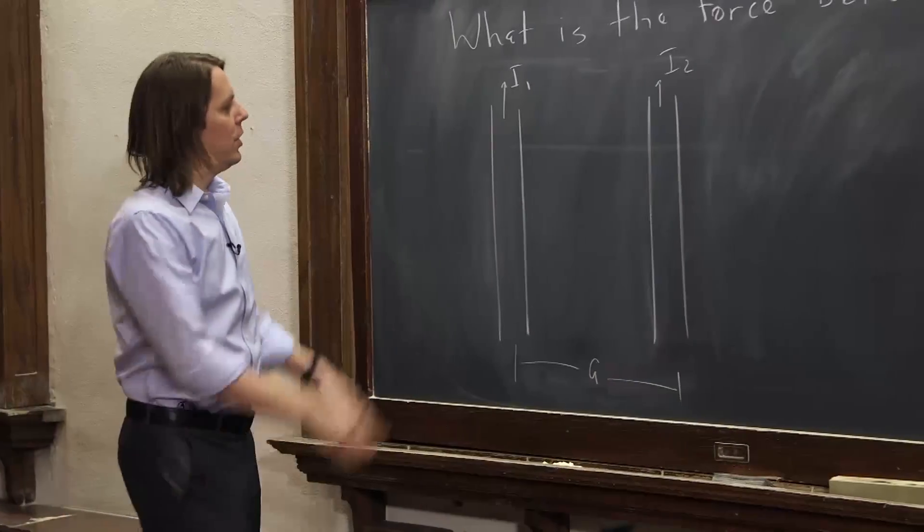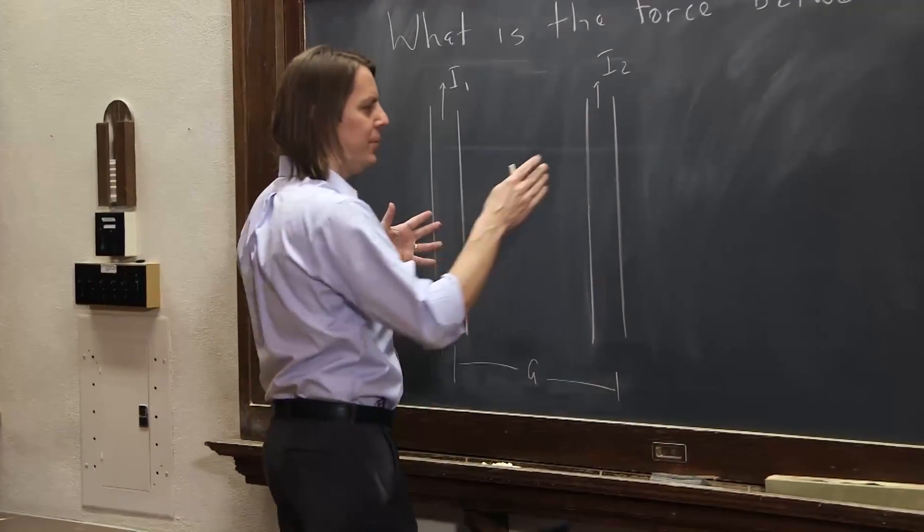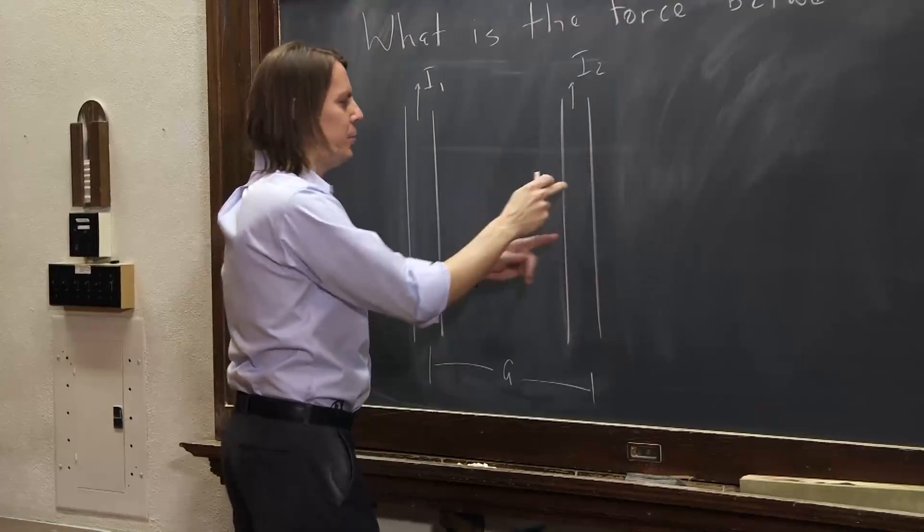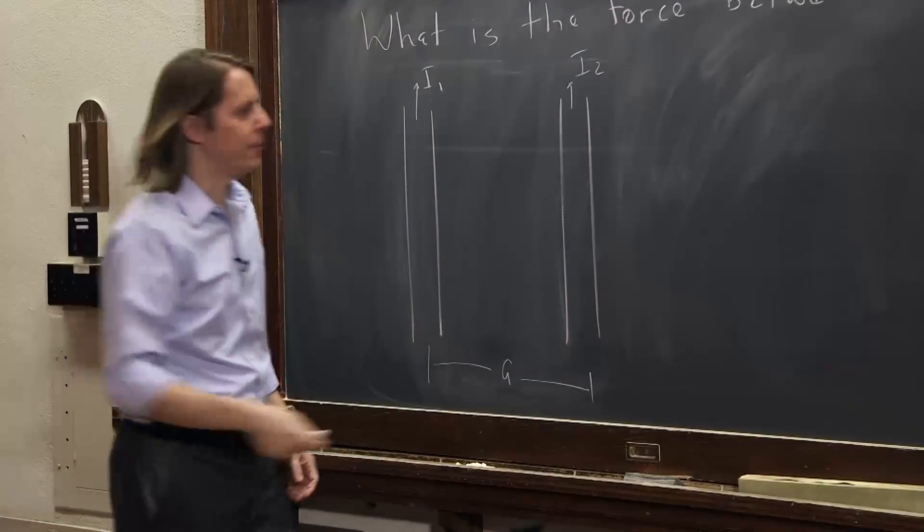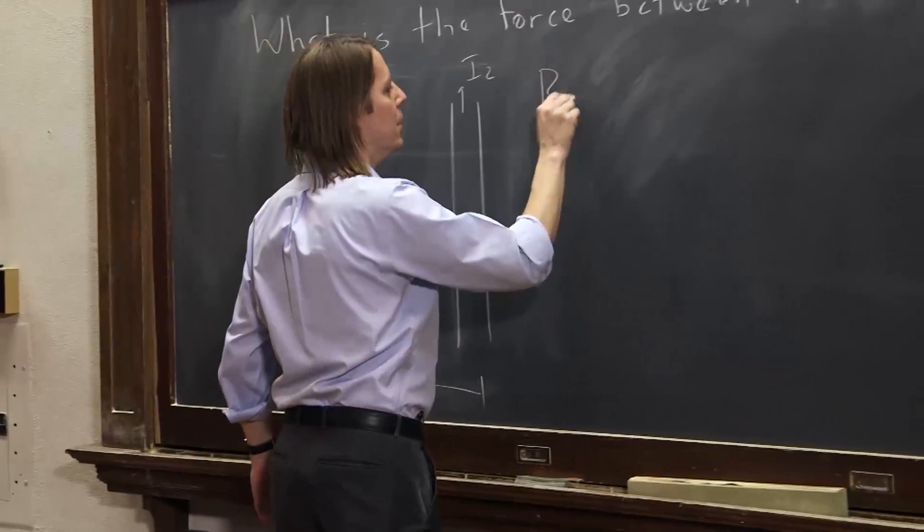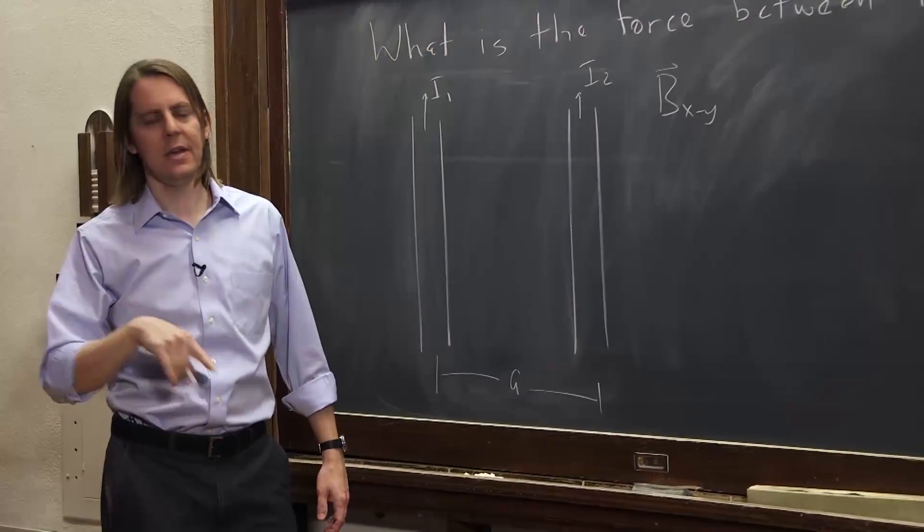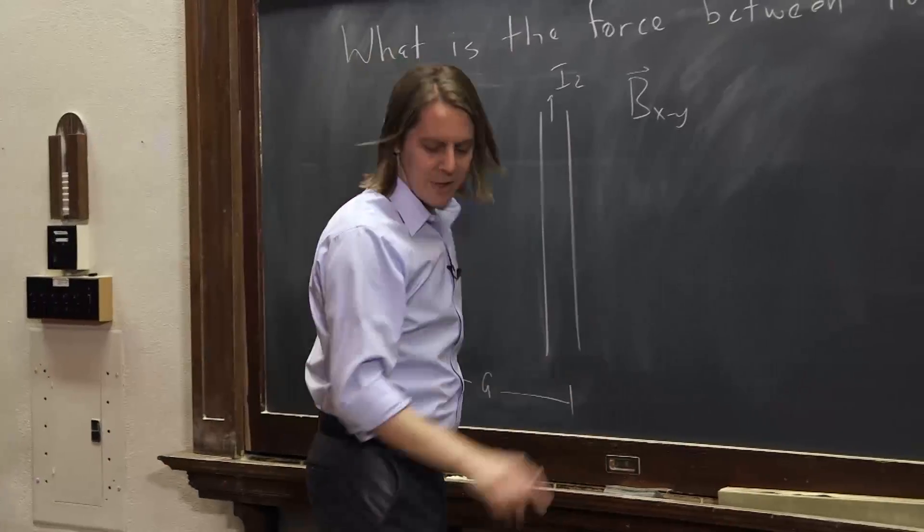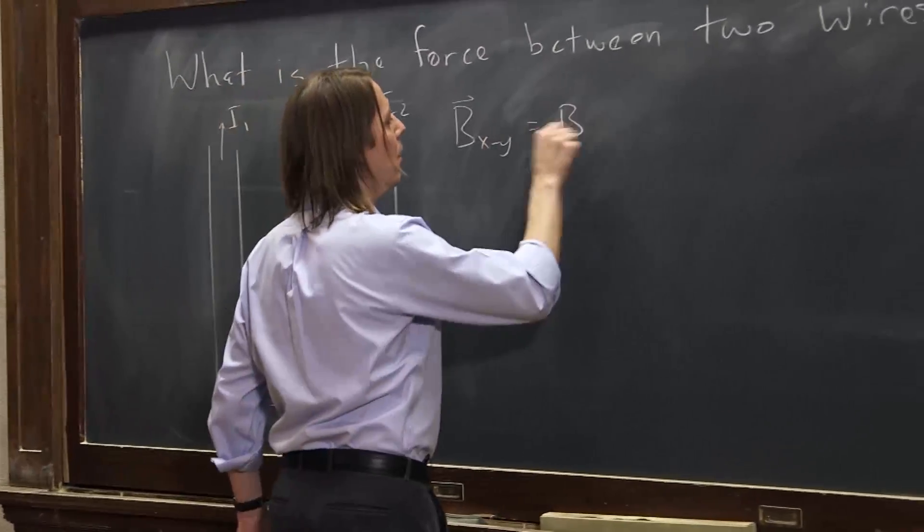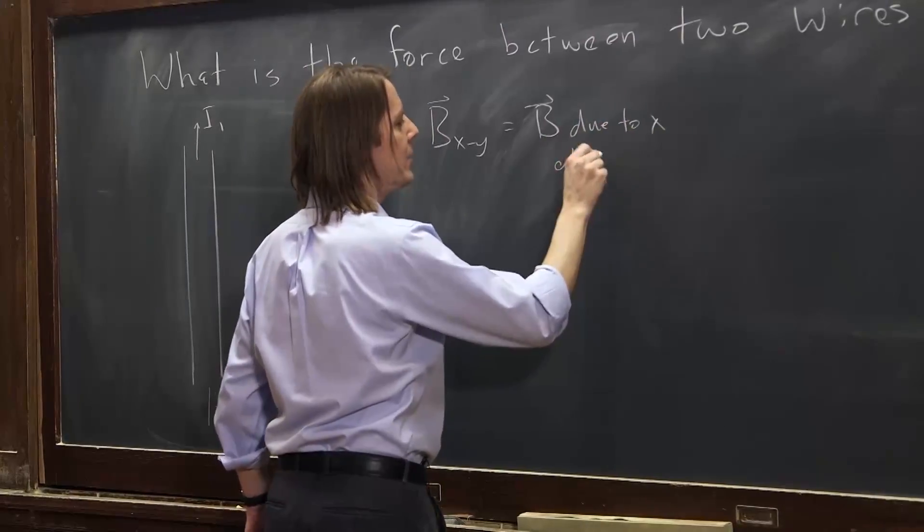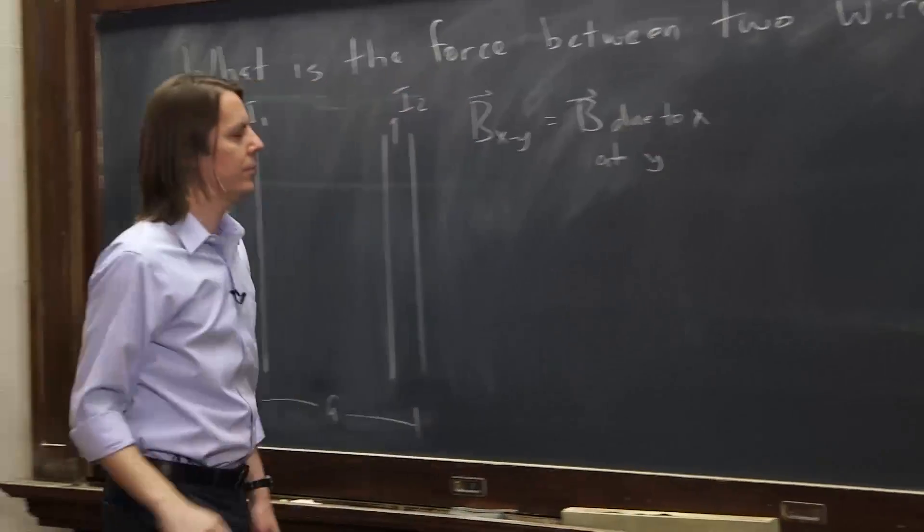Okay, so the reason there's going to be a force is this one's going to make a magnetic field here and this one is going to feel a force because of that field. This one will make a magnetic field here. So the first step is to calculate the magnetic fields. And the notation that we're going to use is Bx-y, where that means B due to x at y.